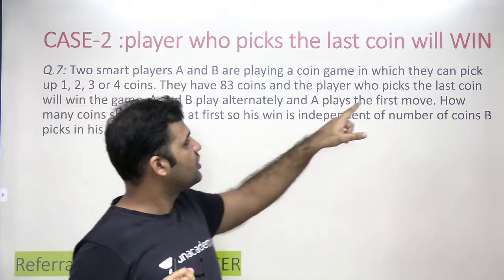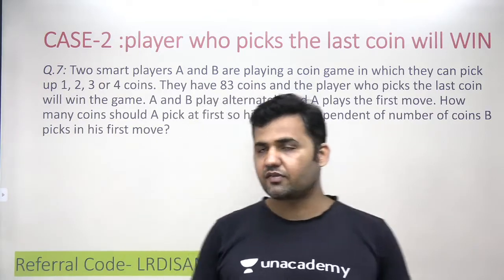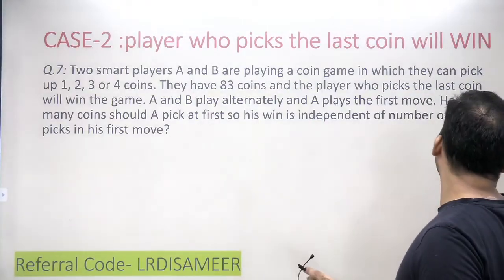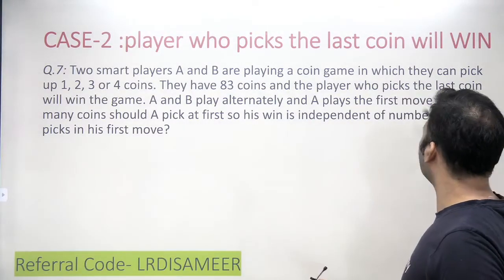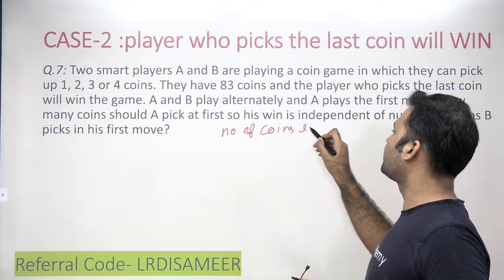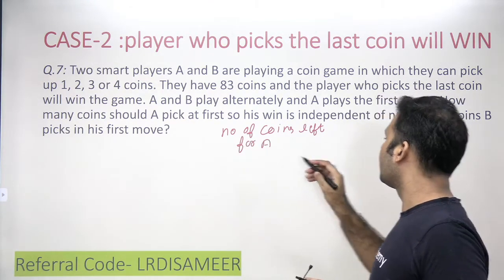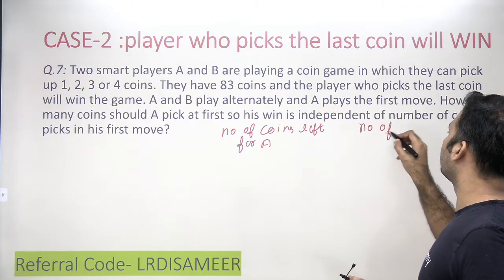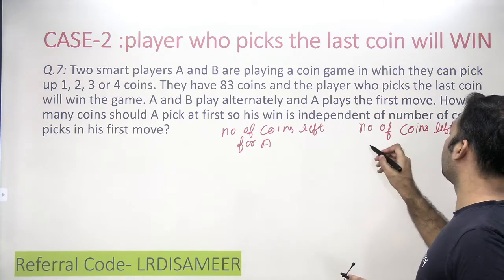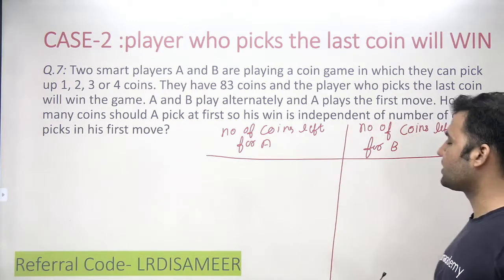Now let's derive the controlling factor in this case. There are two things you need to take care of: the number of coins left on the table for A, and the number of coins left for B.